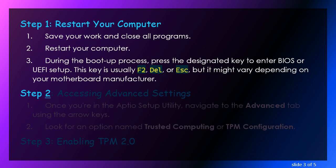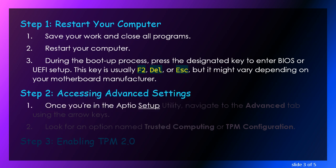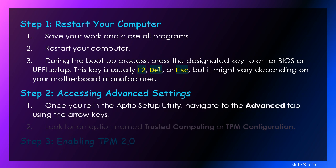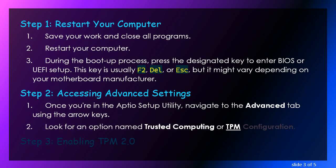Step 2: Accessing Advanced Settings. Once you're in the Aptio Setup Utility, navigate to the Advanced tab using the arrow keys. Look for an option named Trusted Computing or TPM Configuration.